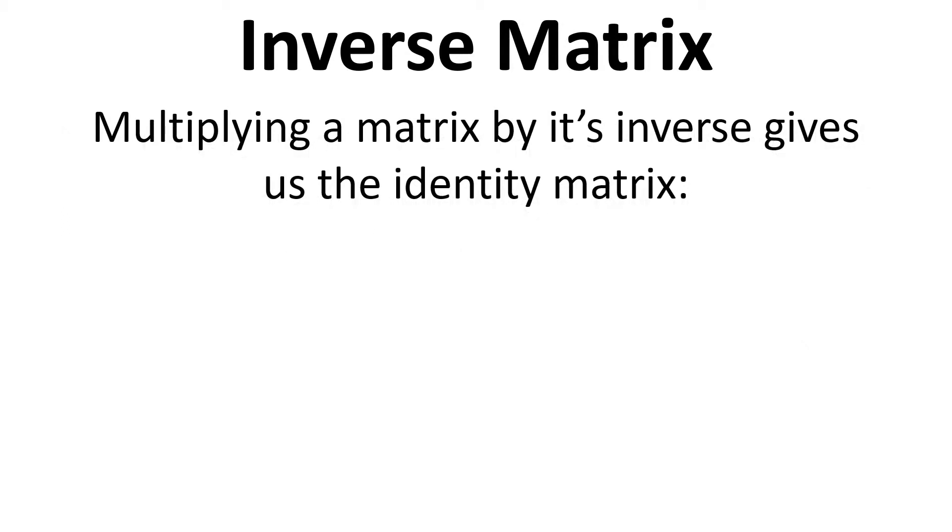So when we multiply a matrix by its inverse we get the identity matrix. And the equation to represent this is capital A to represent our matrix, and then capital A to the power of minus 1 to represent the inverse. So this doesn't mean 1 divided by that matrix, it means the inverse of that matrix. And when we multiply these together we get I, the identity matrix.